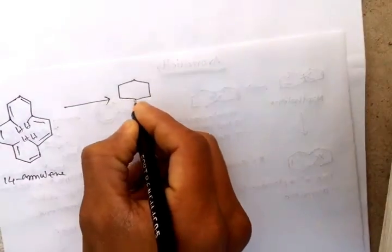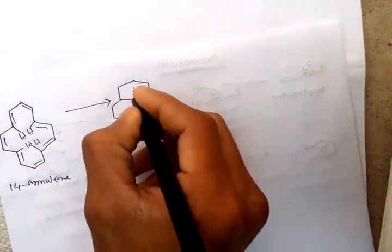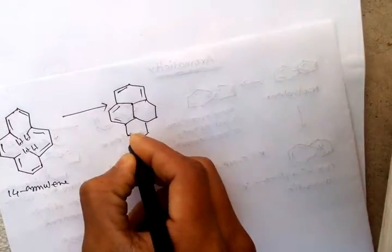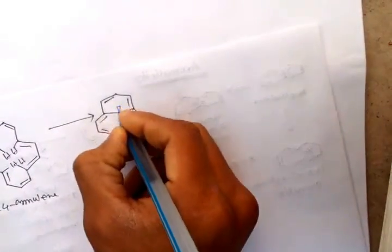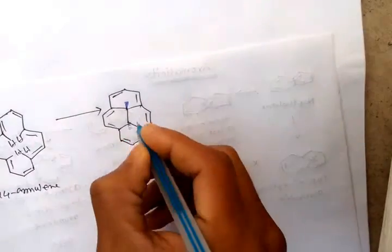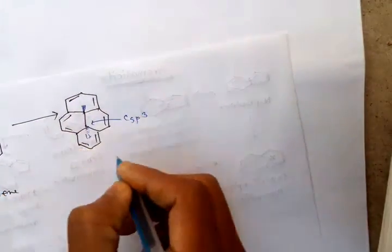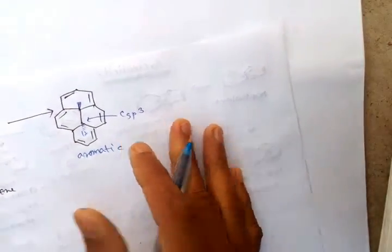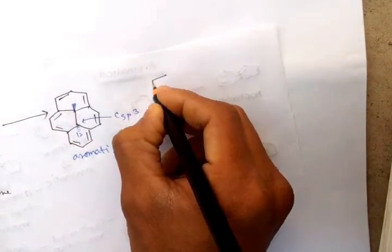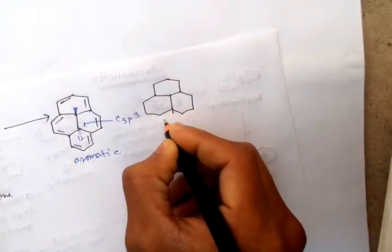If we connect this hydrogen, this hydrogen, this hydrogen, and this hydrogen by a carbon atom, it forms a modified structure. Here the bridging carbon is sp3, so the overall compound is not planar, but the planarity is enough for overlapping — so it is aromatic.